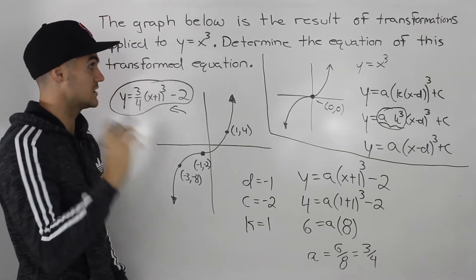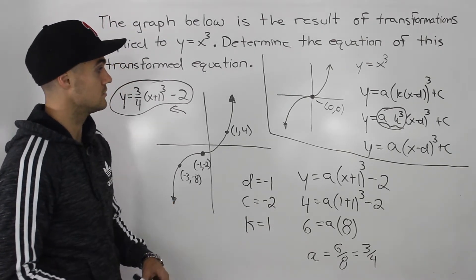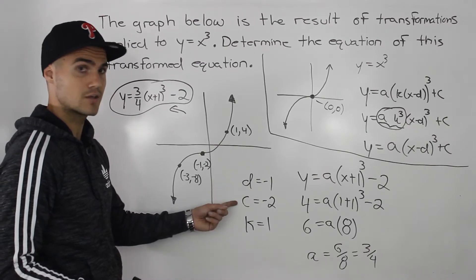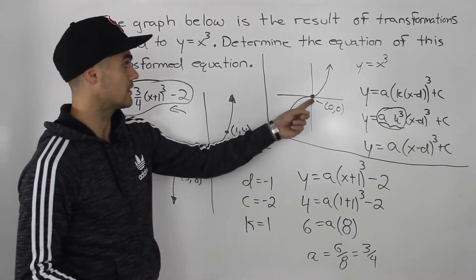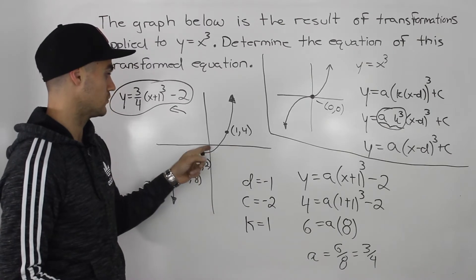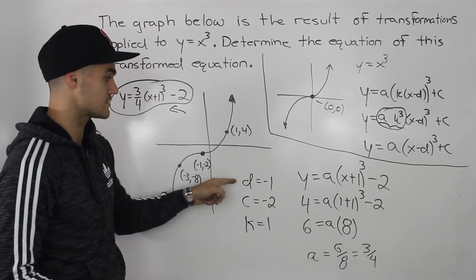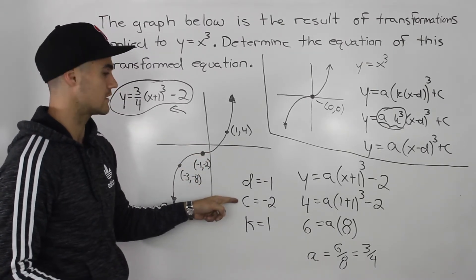All right, so one more time when you're dealing with x cubed, first thing you want to do is figure out what the d and the c value are, seeing where did that saddle point of 0 and 0 get transformed. Well, we went 1 to the left, 2 down. So d value is negative 1, c value is negative 2.